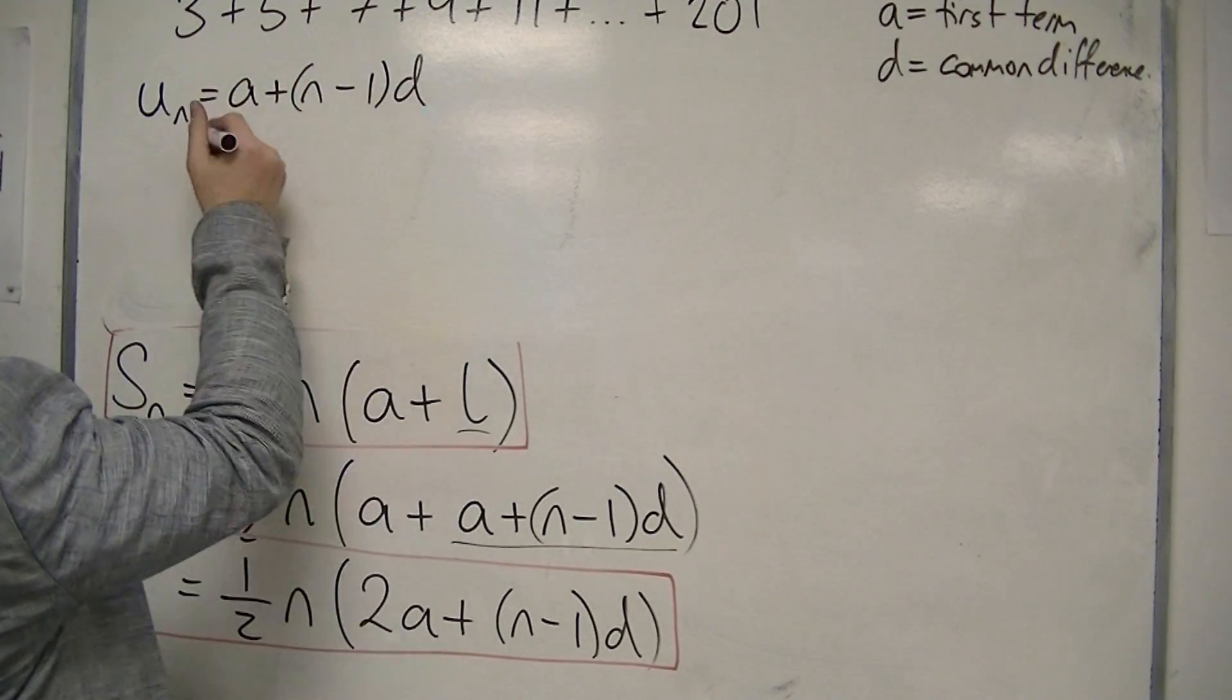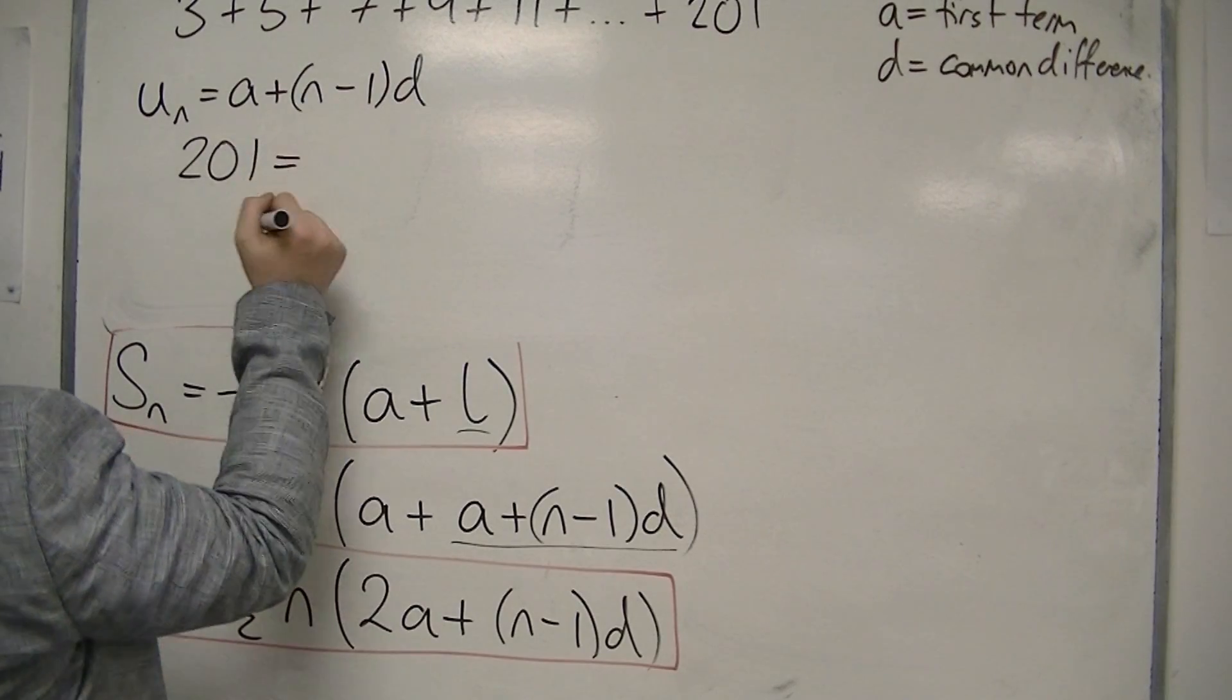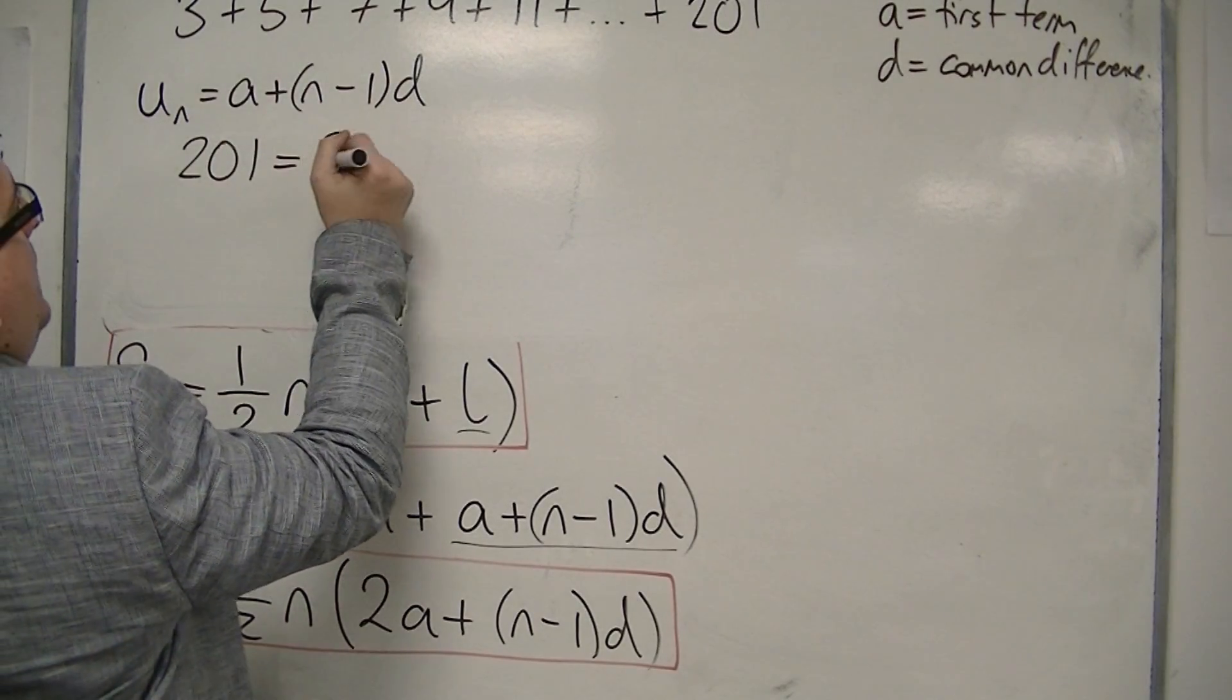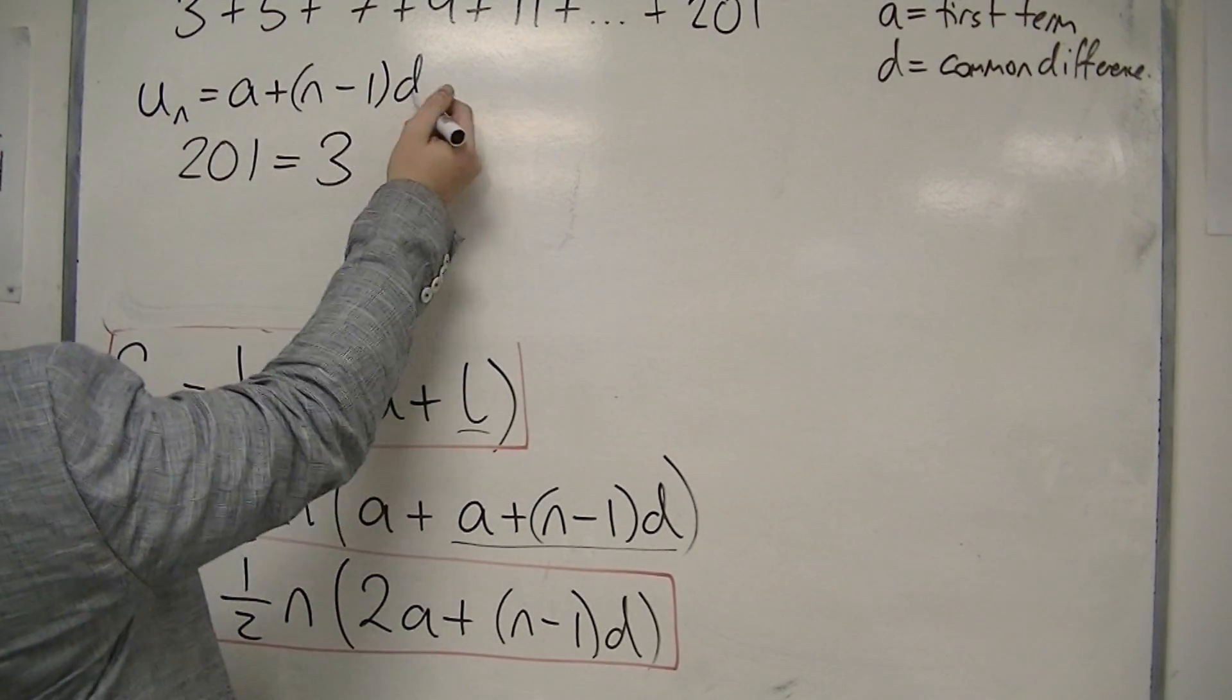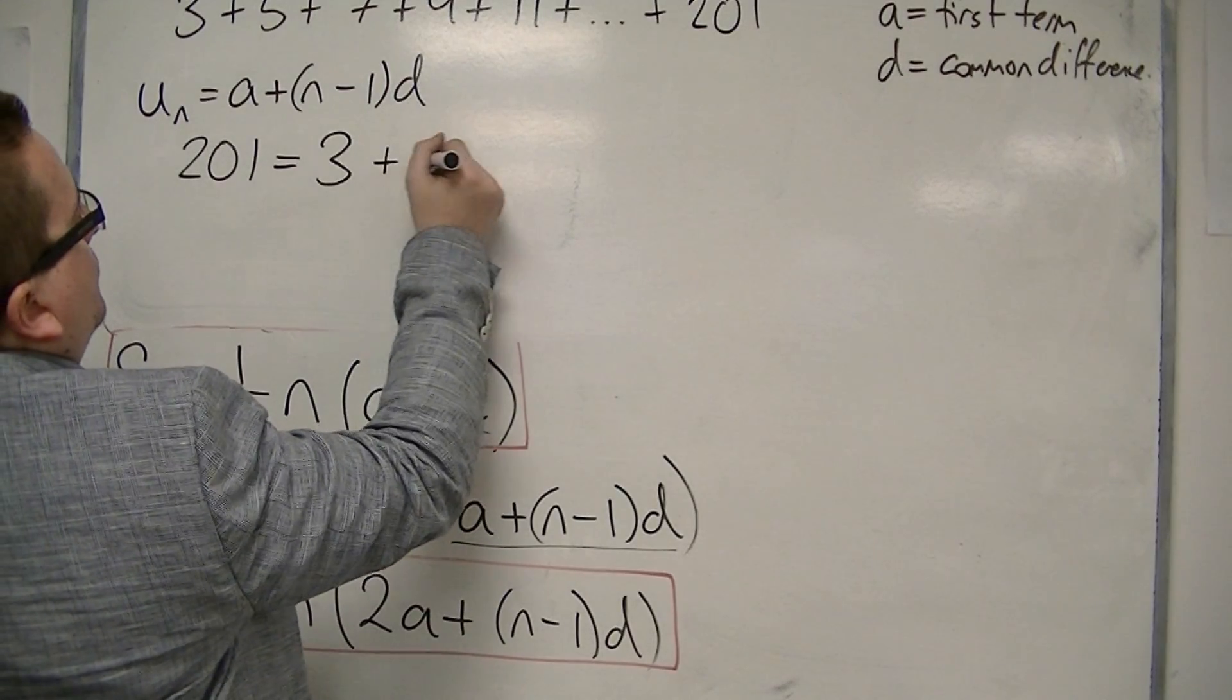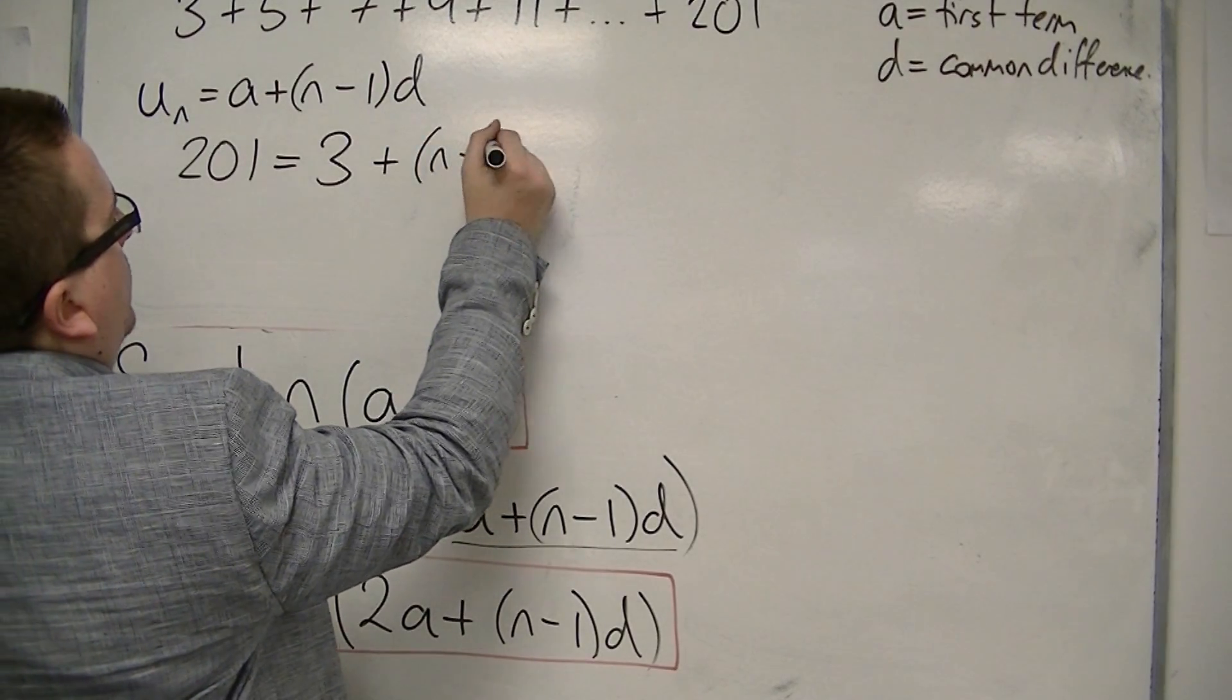So if I set 201 to be the last term, the first term A is 3, and D is 2. So N minus 1 times 2.